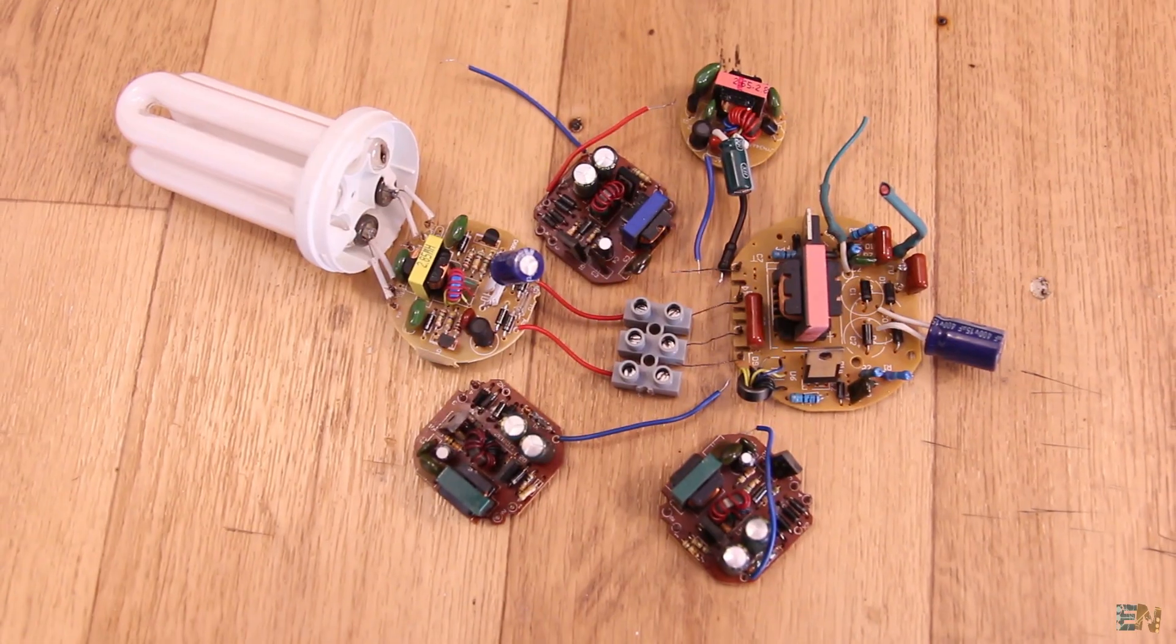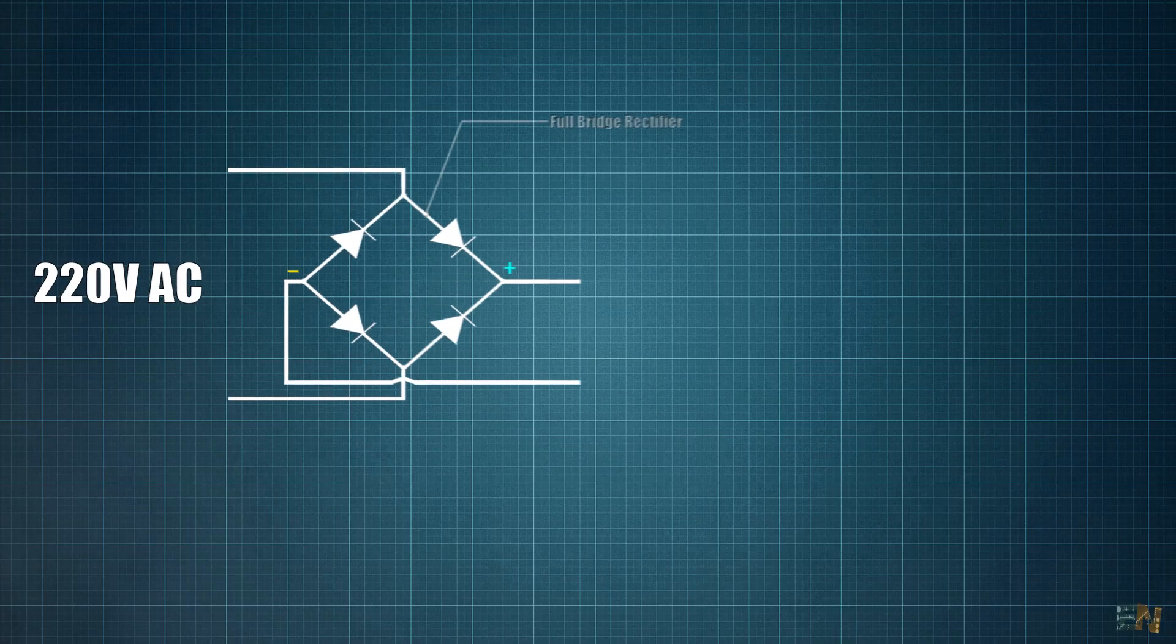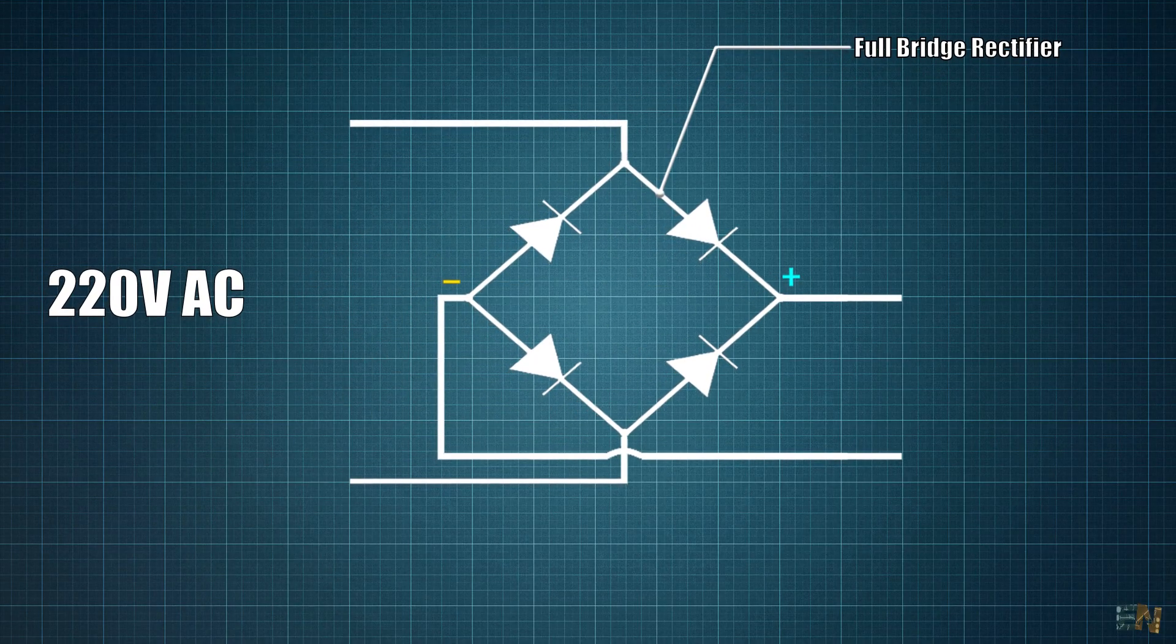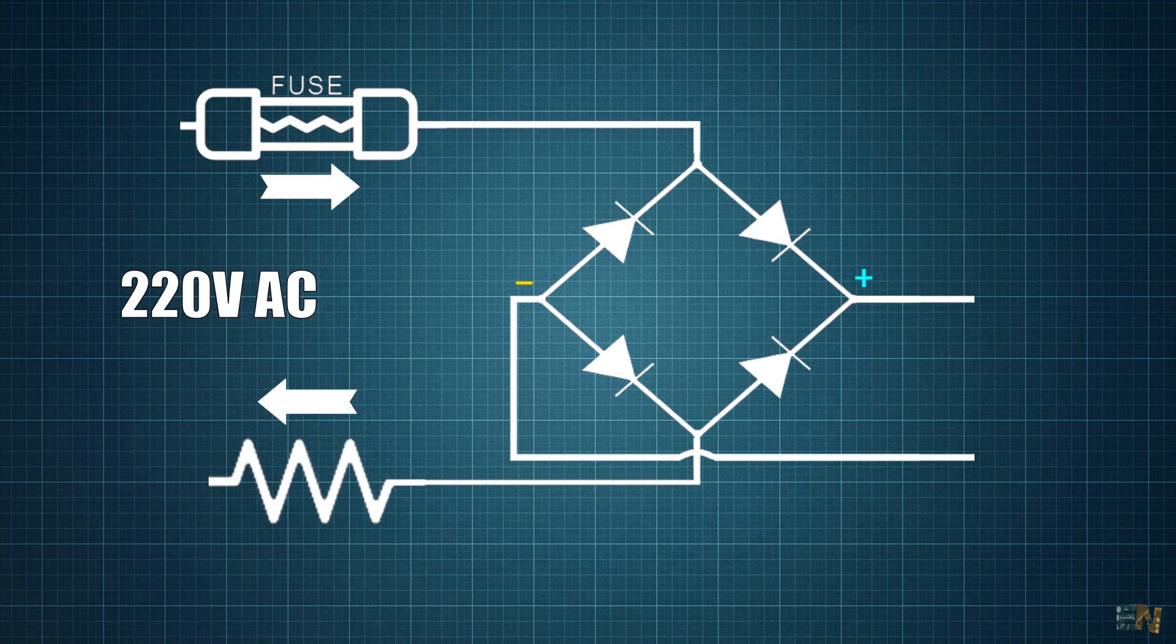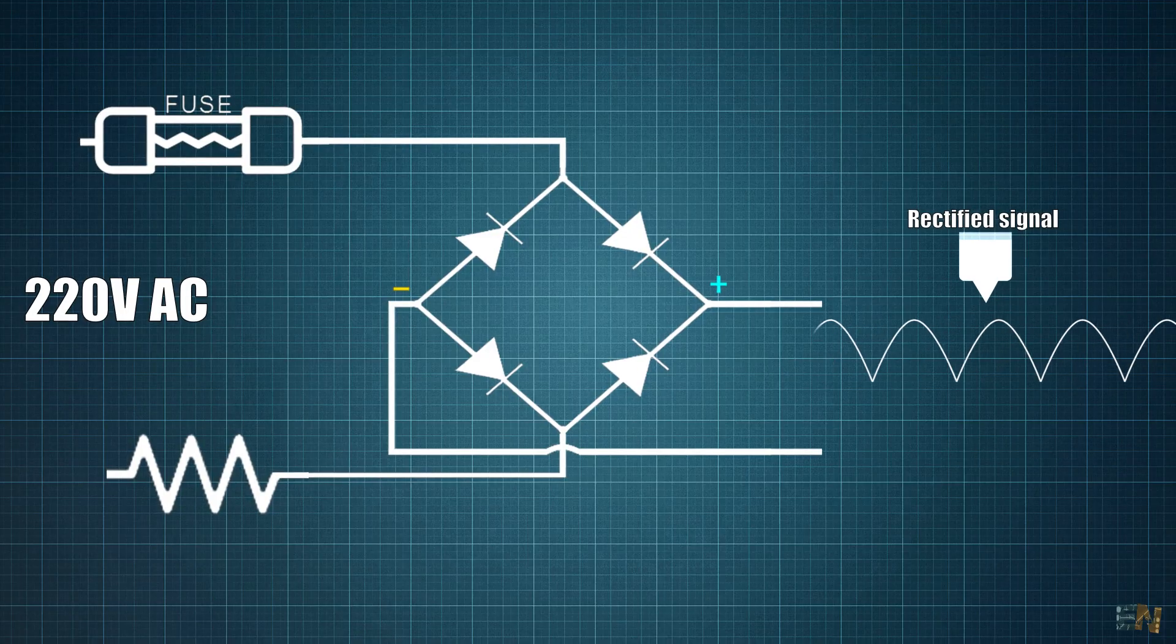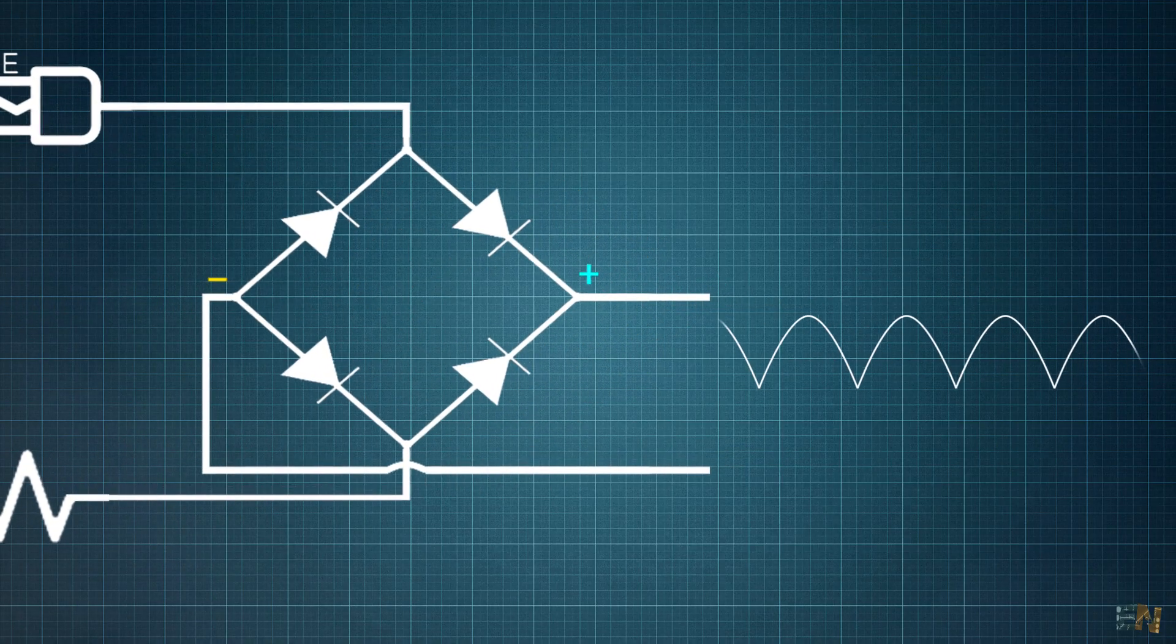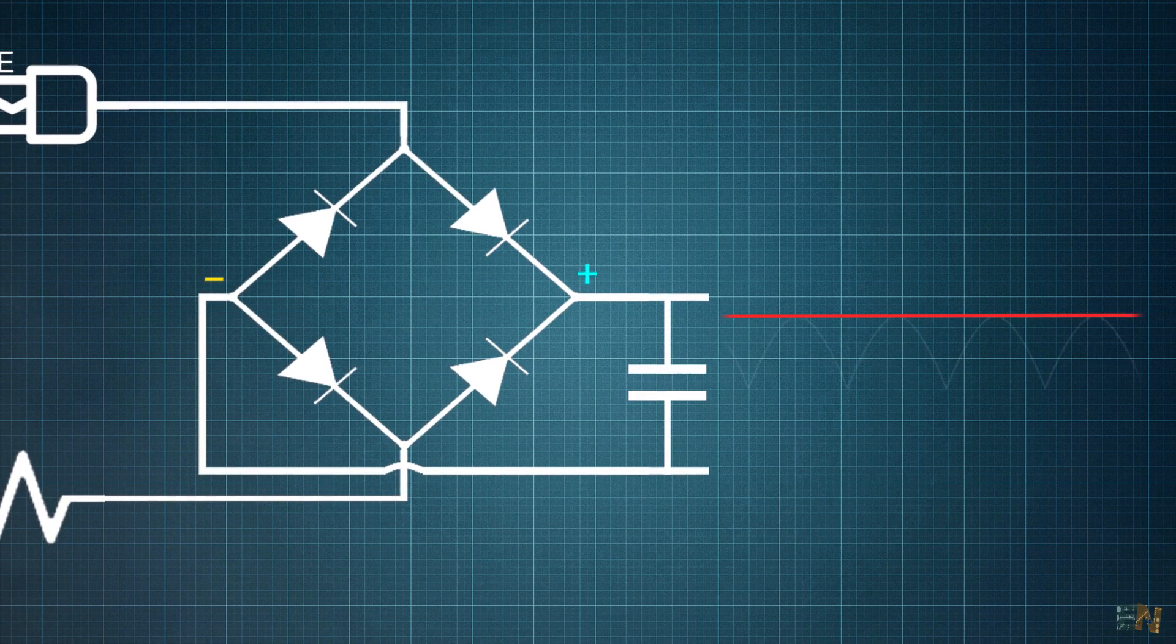These components will work with DC voltage. First from those 220V AC, we place the full bridge rectifier. But first we usually have a fuse for protection and sometimes we have a resistor to limit the current. The rectifier will rectify the signal, as we have seen in the SMPS video, and only get the positive waves. We then add a capacitor which will filter the voltage and give us a steady high voltage DC.